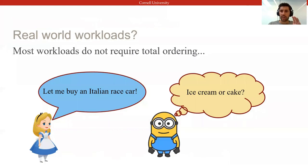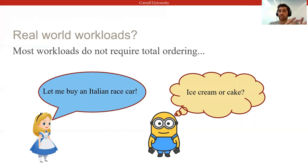It's not very hard to see that all of this is overly heavy-handed for real-world workloads that consist largely of commutative transactions. The transactions of Alice and Bob, who are trying to buy an Italian race car or gelato respectively, could have been safely executed in parallel.